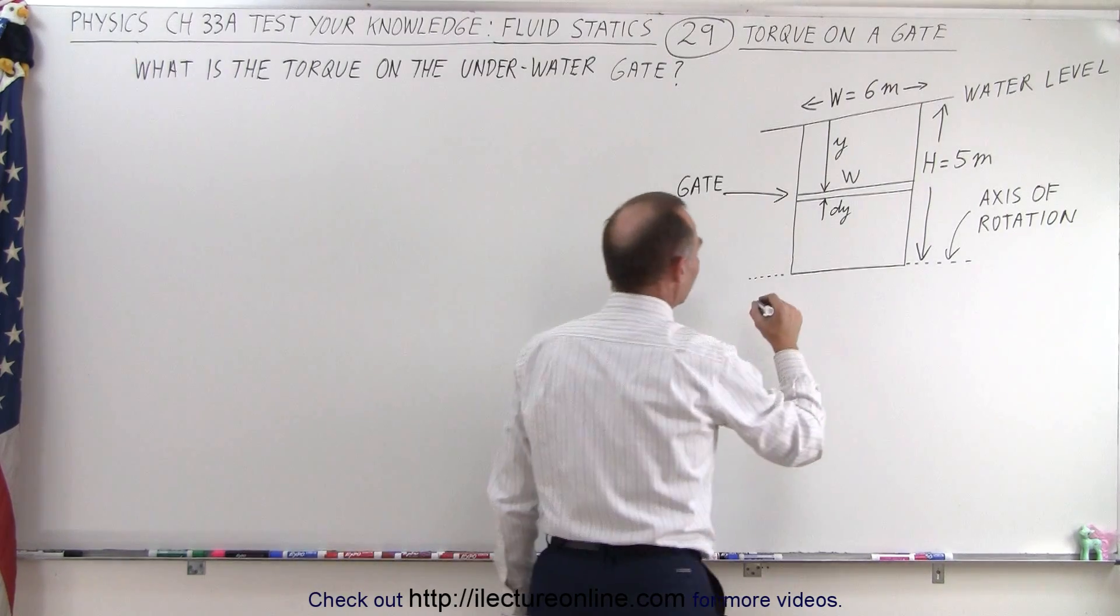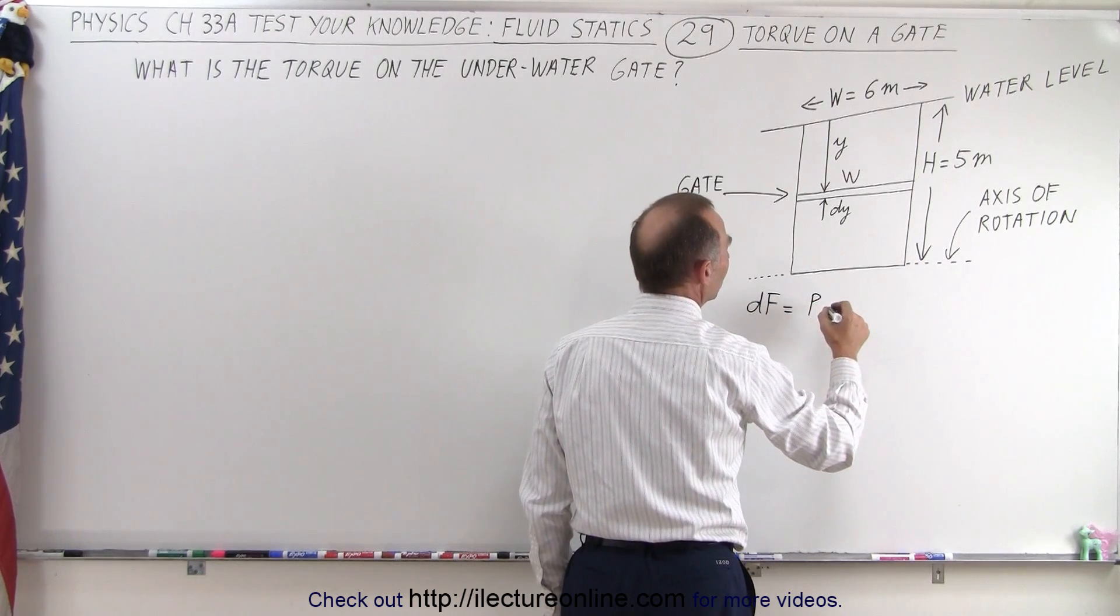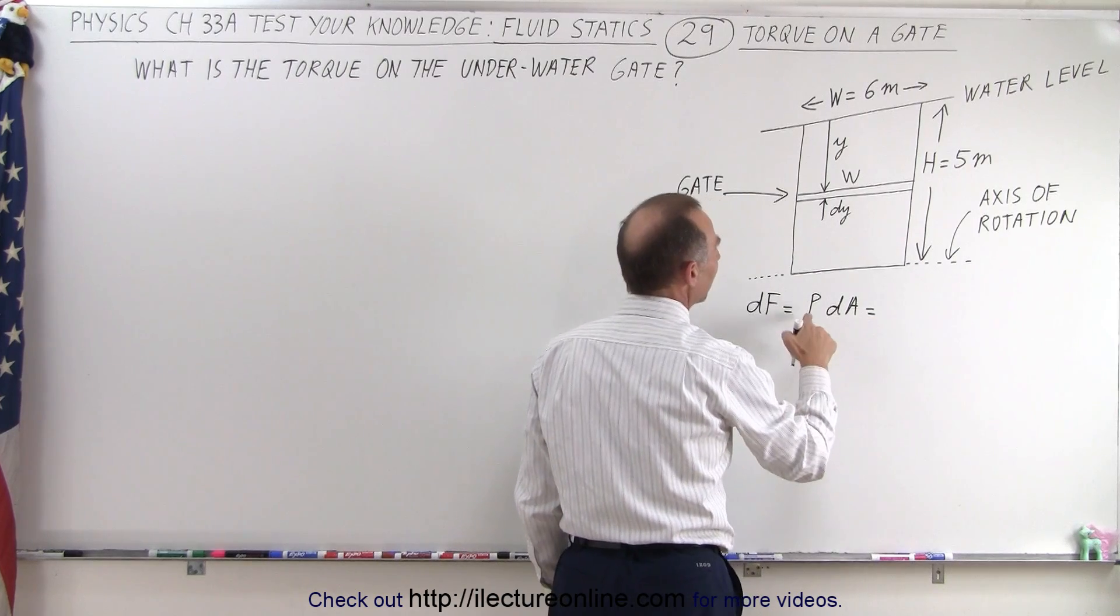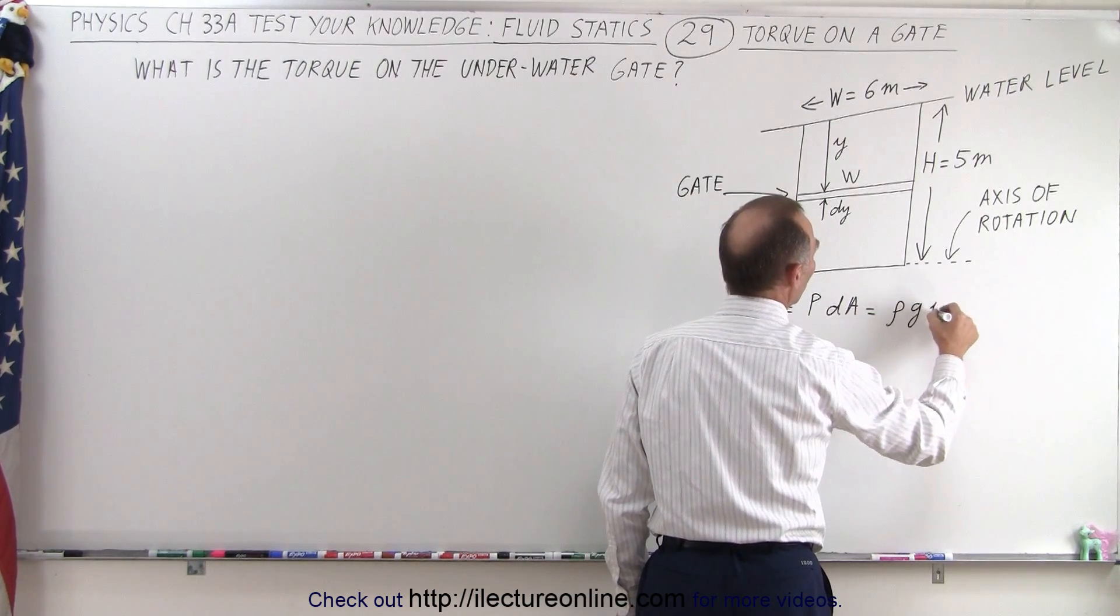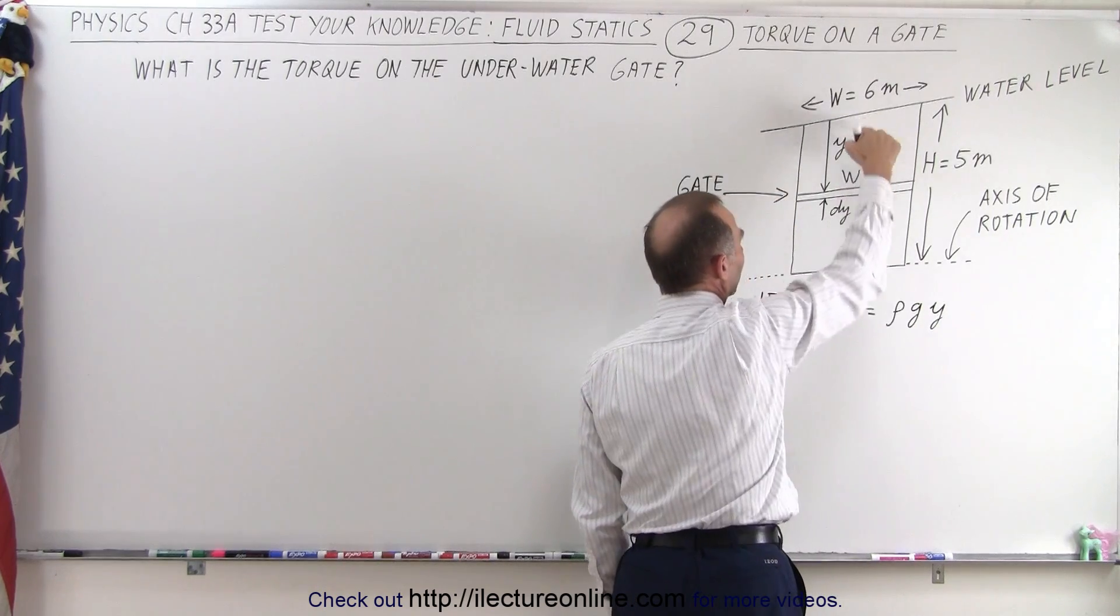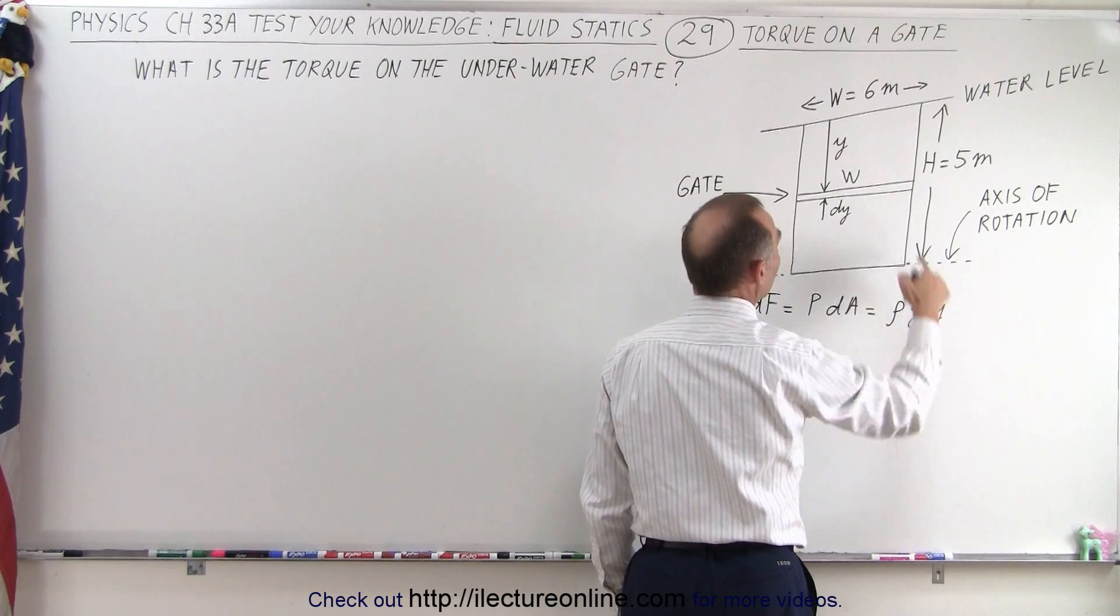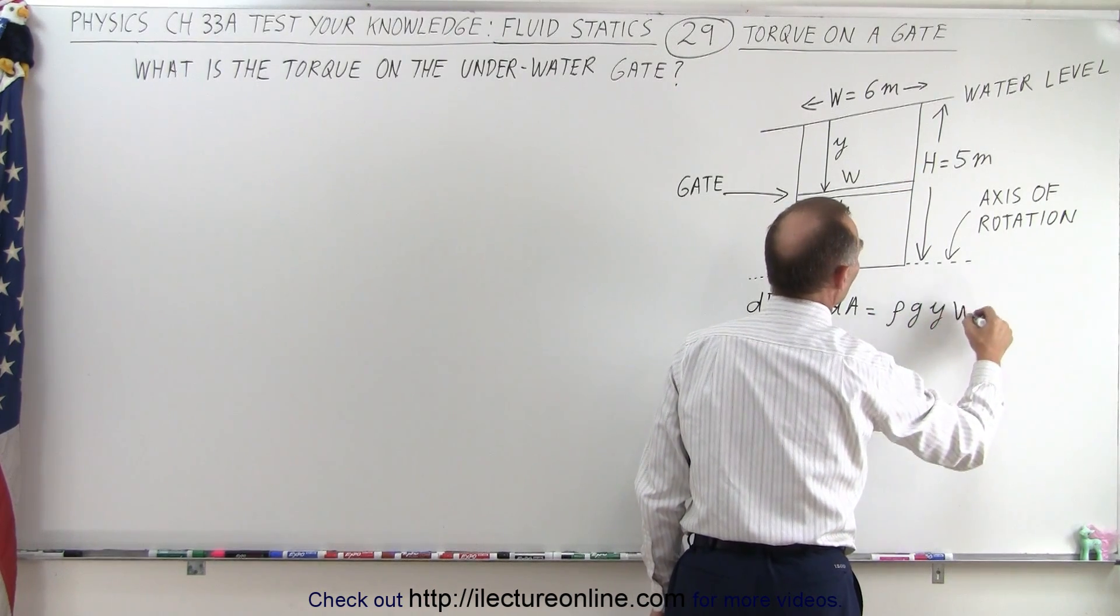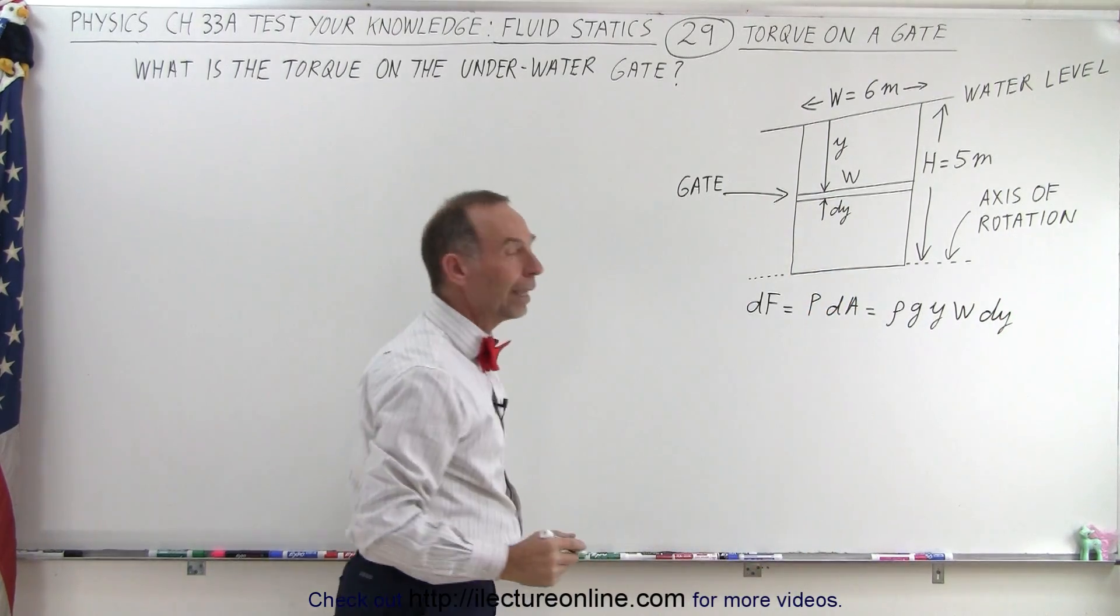So you can say that the force, which is a small amount of force, is equal to the pressure times the area which would be DA. And the pressure of course is going to be ρGY that's the pressure at a depth Y below the surface, that's for the liquid, the density G and then the distance Y, and then DA would be W times DY.